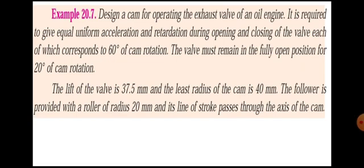This involves uniform acceleration and retardation motion. The opening and closing each correspond to 60 degrees of cam rotation. The valve must remain in the fully open position for 20 degrees of cam rotation — this is the dwell. The lift of the valve is 37.5 mm, stroke length is 37.5 mm, the least radius of the cam is 40 mm, and the roller radius is 20 mm. We are going to do the roller follower drawing, with offset zero since the line of stroke passes through the cam axis.